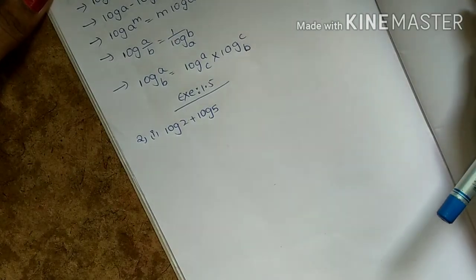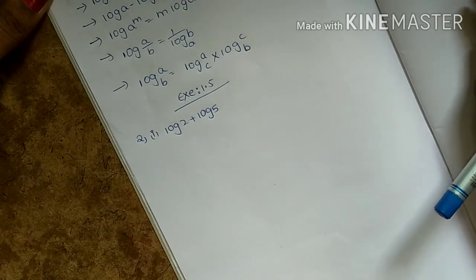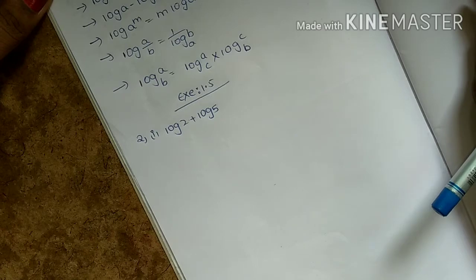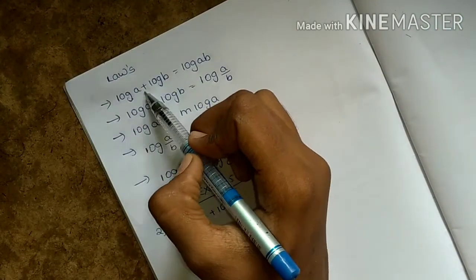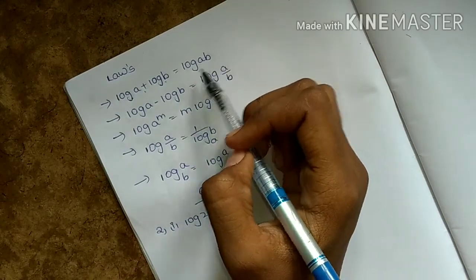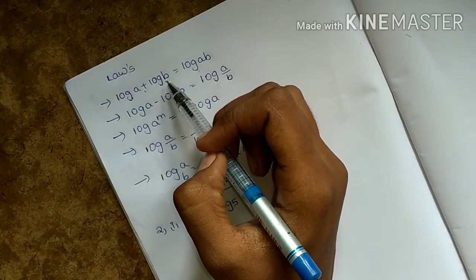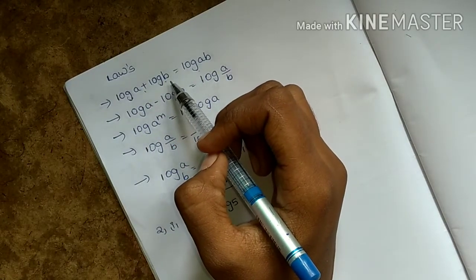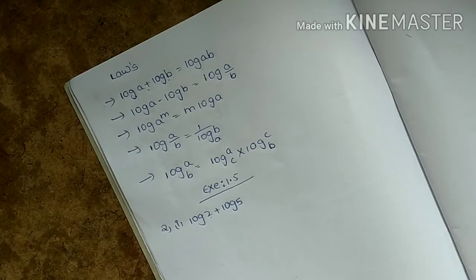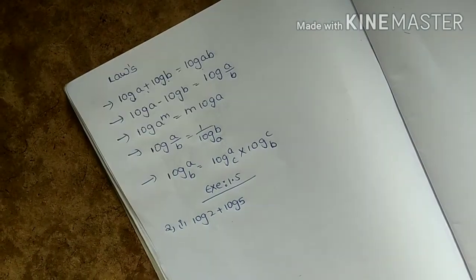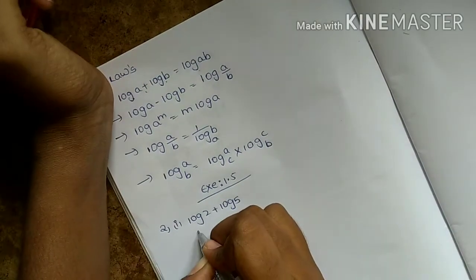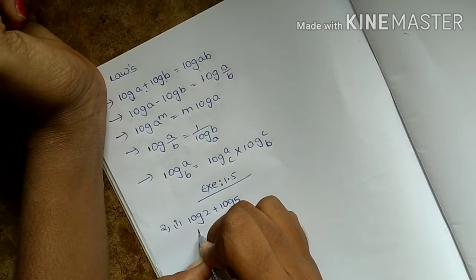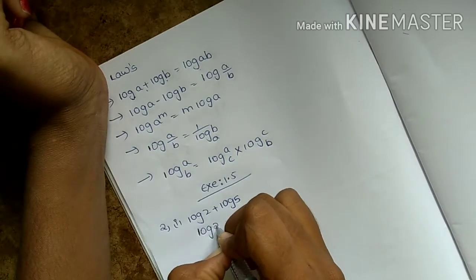So, log 2 plus log 5. In the second step, we will choose log 2 plus log 5. I will choose a formula: log a plus log b equals log ab. Here we will choose a as 2 and b as 5.